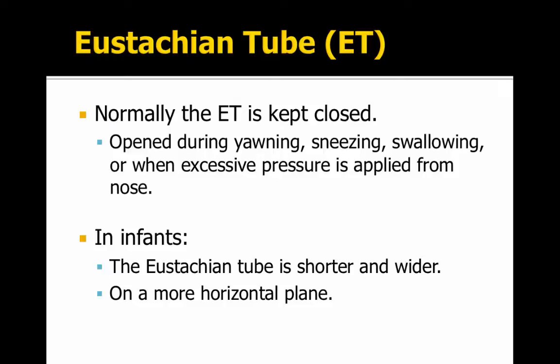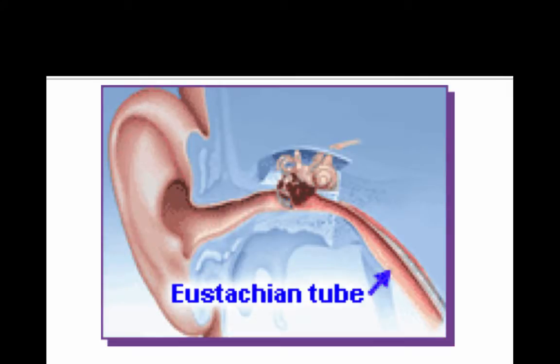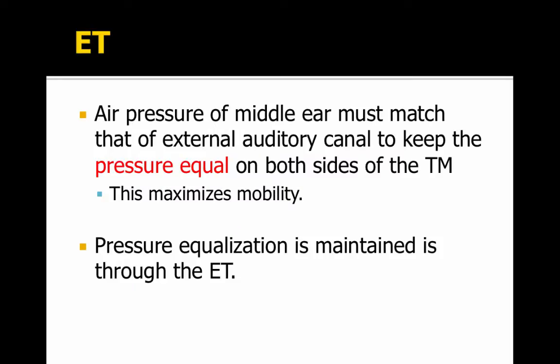Normally the eustachian tube is kept closed, but when you yawn, sneeze, swallow, or apply excessive pressure, it opens up. If you were to yawn right now, you can stretch and open your eustachian tube and feel it aerating your middle ear. The eustachian tube plays an important role in keeping air pressure equal in the middle ear and the ear canal. When the air pressure is equal between the middle ear space and the ear canal, the tympanic membrane moves at its best, so pressure equalization is maintained through the eustachian tube.